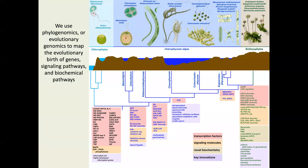My lab uses a combination of phylogenomics — or evolutionary genomics — and traditional forward and reverse genetics to understand how land plants evolved from basically aquatic algal ancestors.